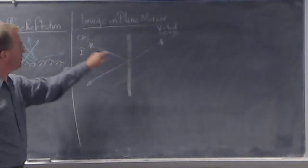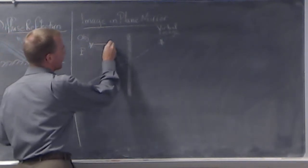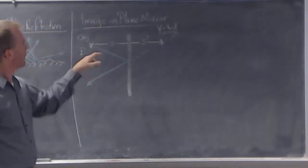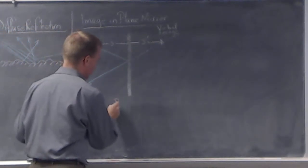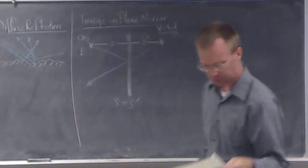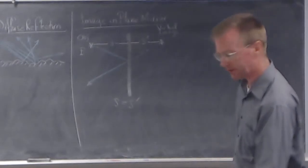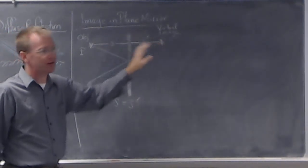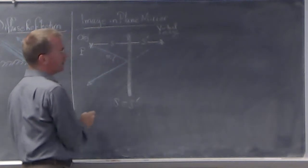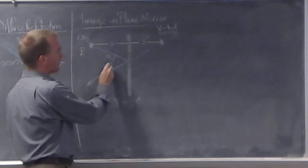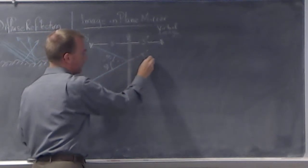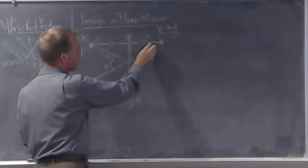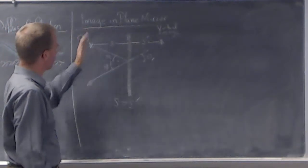The image will appear to be at the same distance from the mirror that the object is. This distance, labeled S, is the same as image distance S prime. Object distance S equals image distance S prime — that's true for any image formed in a plain mirror. The virtual image appears at the mirror-image location from the object because the angle of incidence equals the angle of reflection, and by geometry that places the image at the same distance on the opposite side.